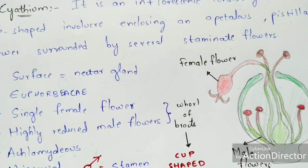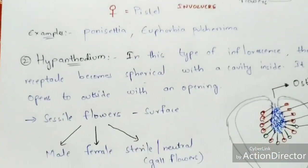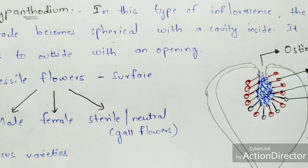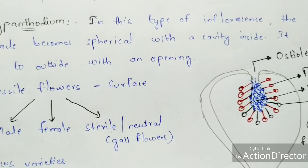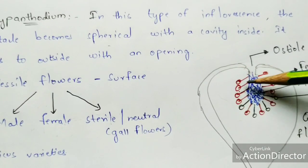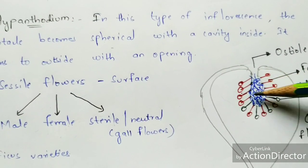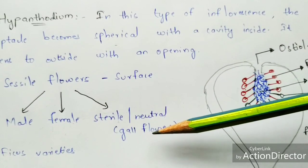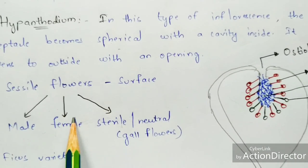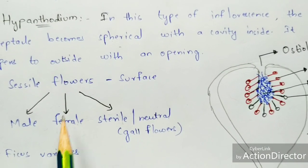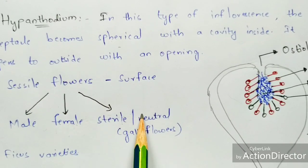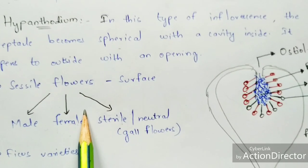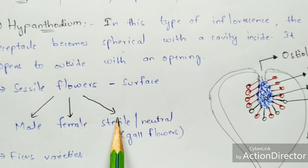Coming to hypanthodium type of inflorescence. In this type, at the surface region, sessile flowers will be present called cesarean flowers, and these are of three types: male flowers, female flowers, and sterile or neutral flowers also called gall flowers. This hypanthodium type of inflorescence you can see in the ficus variety of plants.